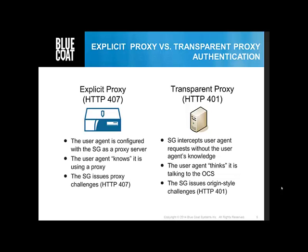When transparent proxy is enabled, the client, or the browser, does not know that traffic is being processed by a machine other than the OCS. The browser believes it is talking to the OCS, so the request is formatted for the OCS, and the proxy determines for itself the destination server based on information in the request, such as the destination IP address in the packet or the host header in the request.